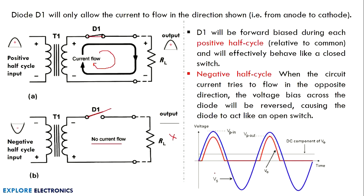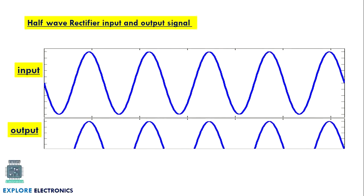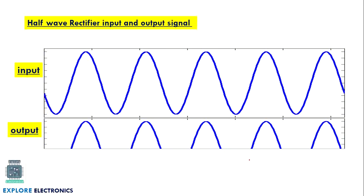Here is the waveform illustrating the half wave rectifier operation. The blue wave indicates the input signal and the red line indicates the output signal. You can clearly observe that in the positive half cycle we get the output, and in the negative half cycle no output is generated. This is the output of the half wave rectifier.